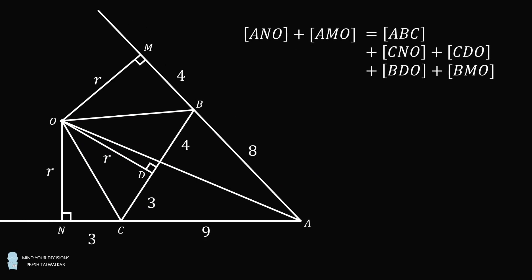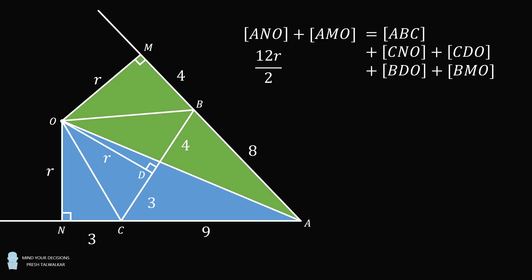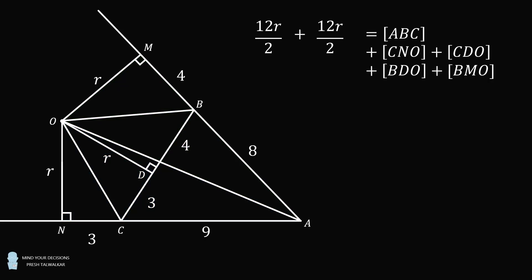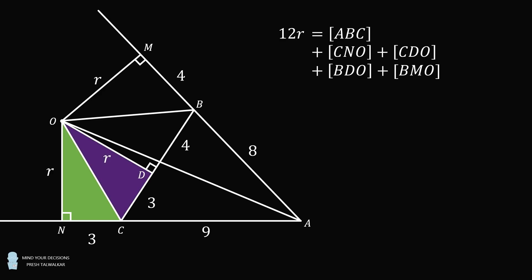Let's now calculate each of these areas. The area of triangle ANO is equal to 12R over 2. That will be the same area for the triangle AMO. We add these areas together, and we get an area that's equal to 12R. Now, let's calculate the areas of some of these other triangles. The area of triangle CNO is equal to 3R over 2. That's the same for the area of triangle CDO. We add these two areas together to get a total of 3R.